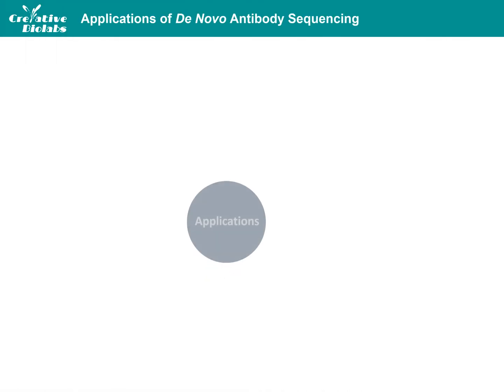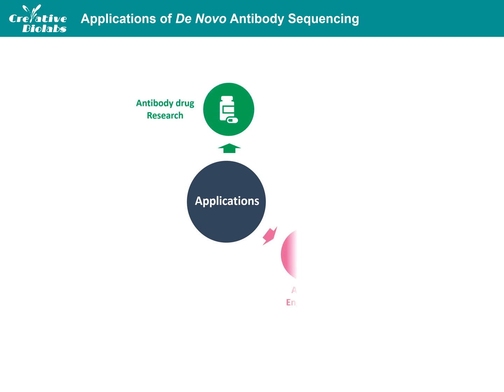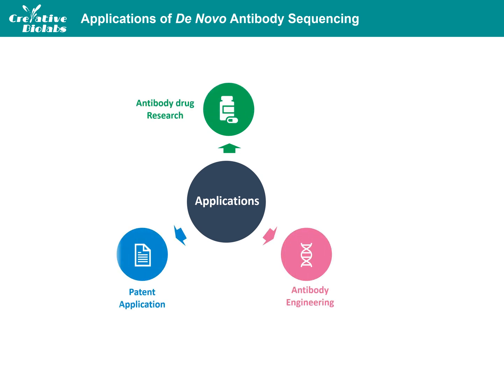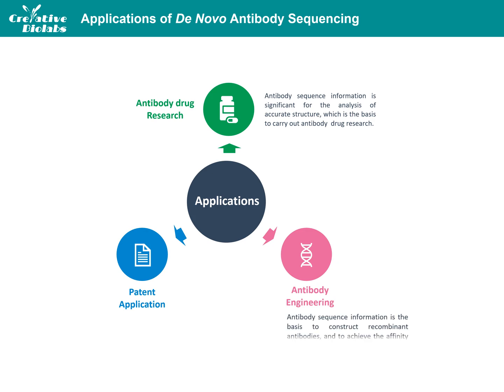De novo antibody sequencing can be applied to antibody drug research, antibody engineering, and patent application. Antibody sequence information is significant for the analysis of accurate primary structure, which is the basis to carry out antibody drug research. Sequence information is also required to conduct modified or recombinant expression of commercial antibodies with helpful properties, as well as to achieve affinity maturation and humanization. The sequences of newly developed recombinant or modified antibodies are required to distinguish them from others and to apply for patents for commercialization.